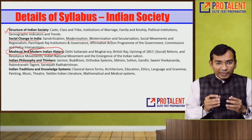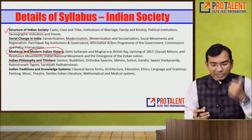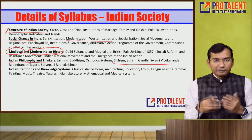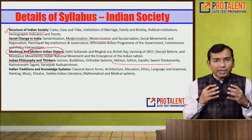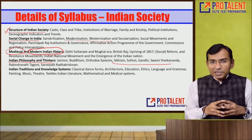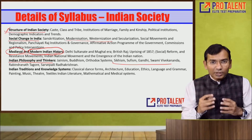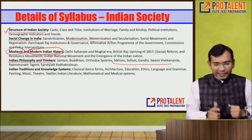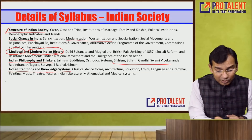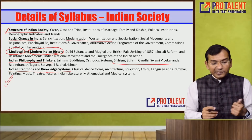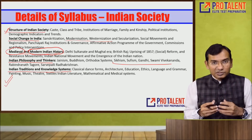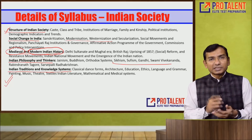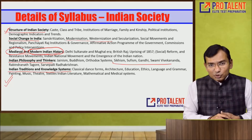You also need to work on Indian philosophy and thinkers — Jainism, Buddhism, orthodox systems, Sikhism, Sufism, Gandhi, and Swami Vivekananda — understanding their ideas and how related questions may be framed. Questions on Indian traditions and knowledge systems will cover painting, music, theater, textiles, Indian literature, and mathematical and medical systems.